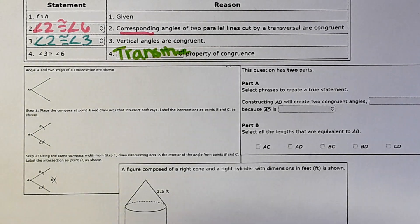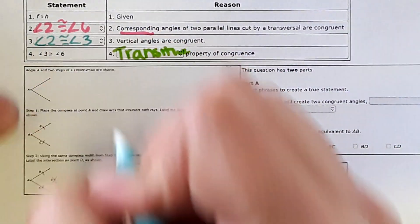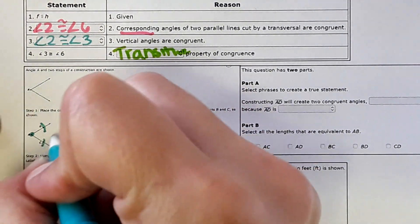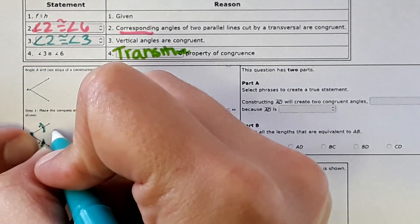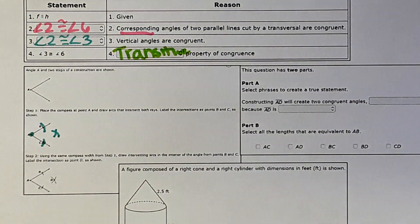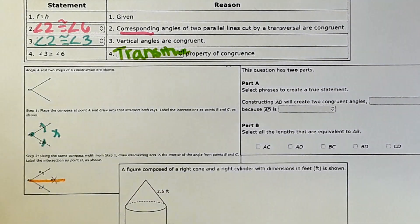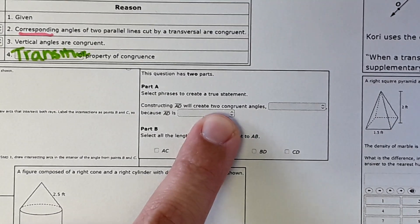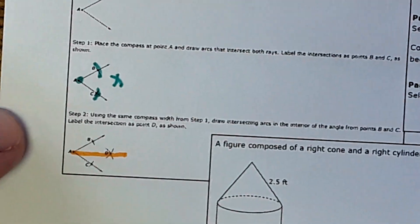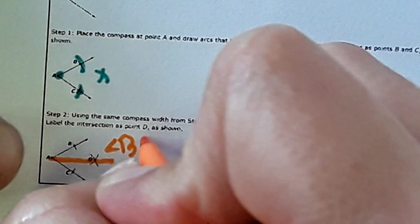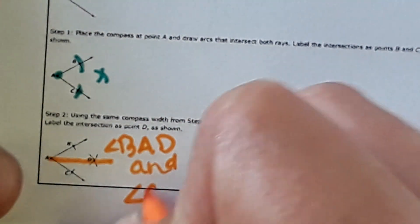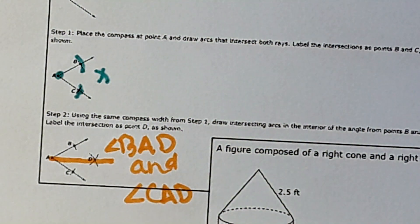Next one, this is one of the ones that we saw on Thursday. It shows a construction here. It shows an angle, then you would put the compass here, make a mark here and here, and then you'd use that same measurement to put the compass right here and make a mark here and here. What you would be making is an angle bisector like that. So over here it has some drop downs that we have to answer questions about. Constructing AD will create two congruent angles. The two congruent angles over here are going to be angle BAD and angle CAD.